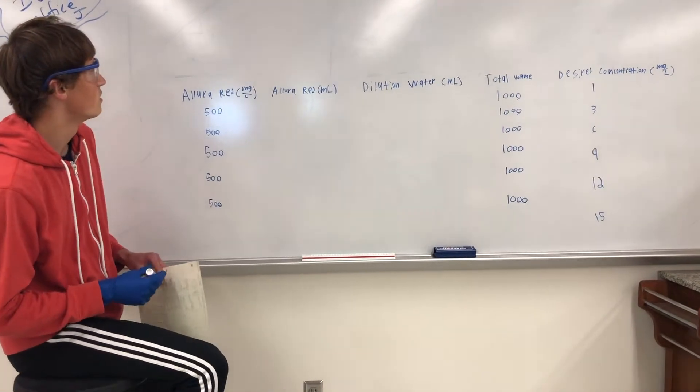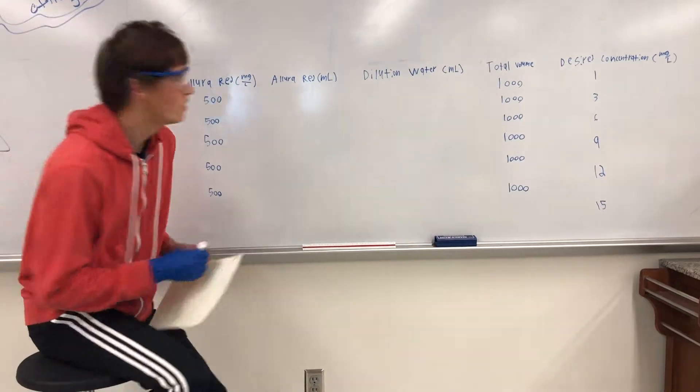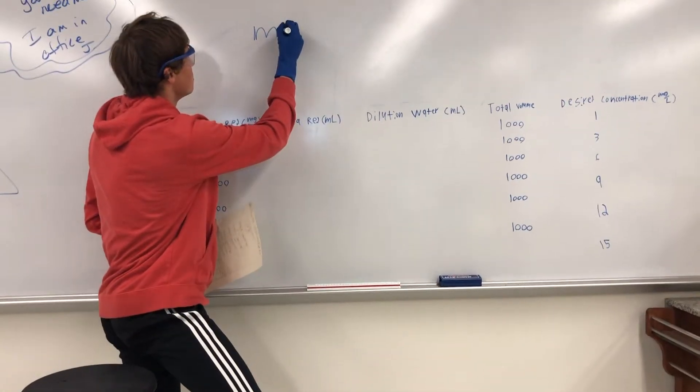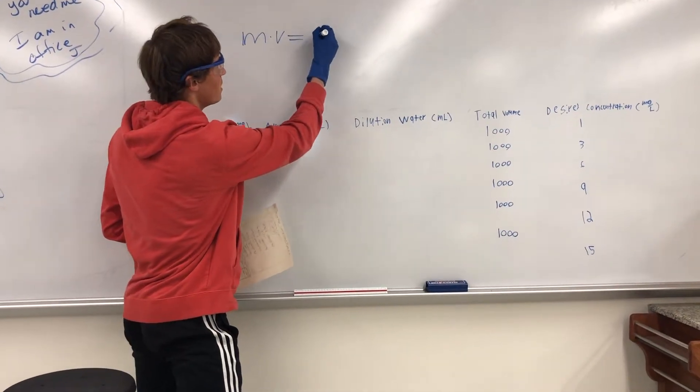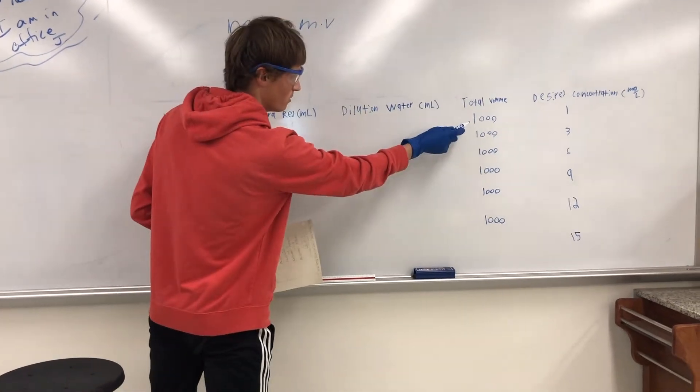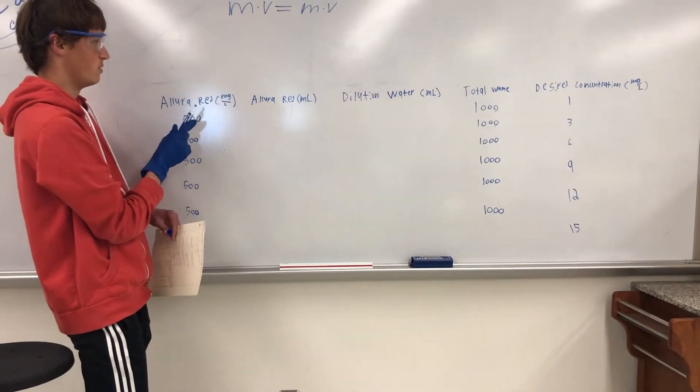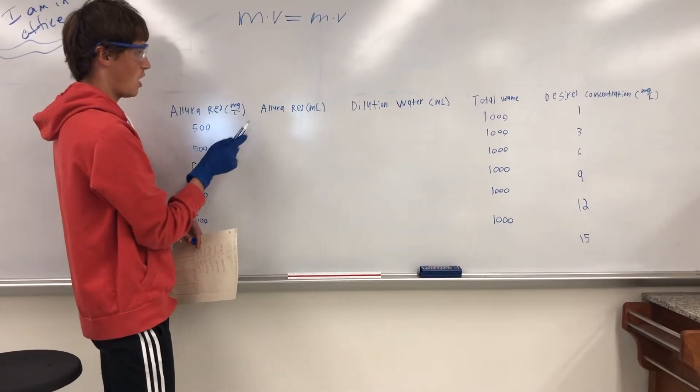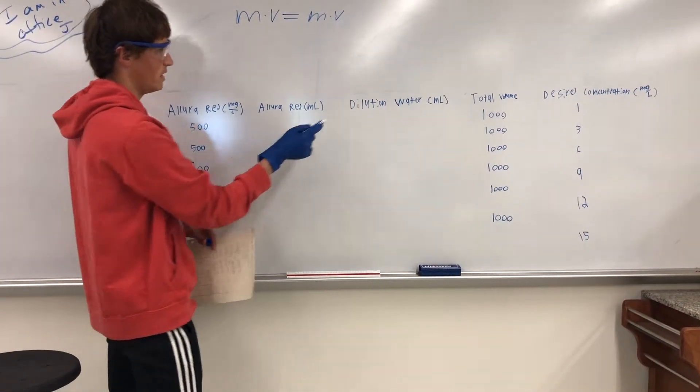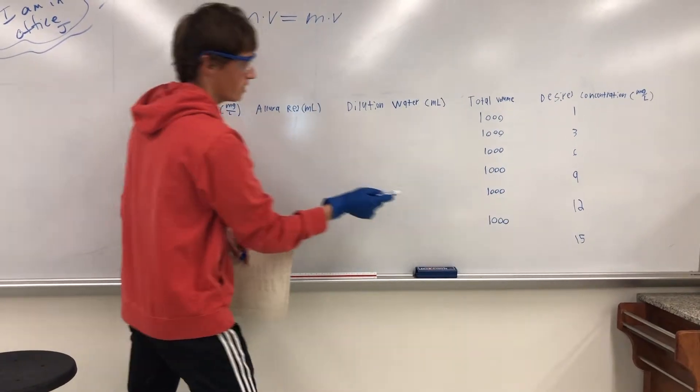And to do this, we need to use the concentration volume formula, which is M times V equals M times V. Now, we want to have a total volume of 100 milliliters, and we have an initial concentration of 500 milligrams per liter. So we need to find out how many milliliters of Valora Red and how many milliliters of water we need to get our desired concentration.